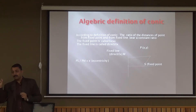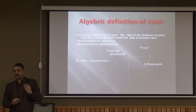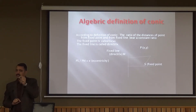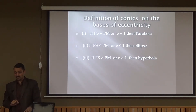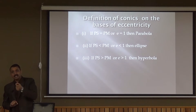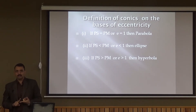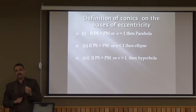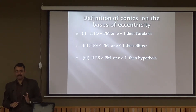We take a fixed point (focus) and a fixed line (directrix) in the plane, and impose the condition that any point P must satisfy: the ratio PS/PM is always constant. This constant E is called the eccentricity. If PS = PM, then E = 1 — the eccentricity is 1, and in this case the figure is a parabola. If PS < PM, then E < 1, and the figure is an ellipse.